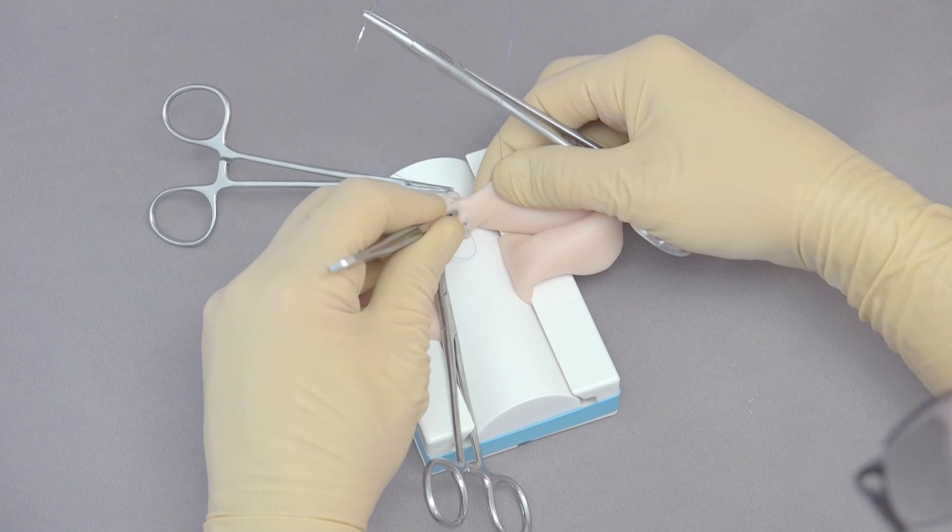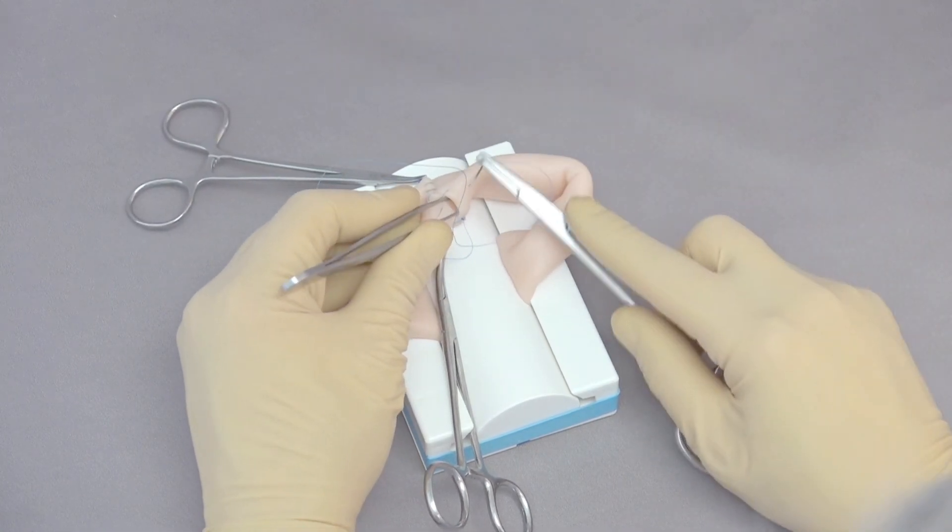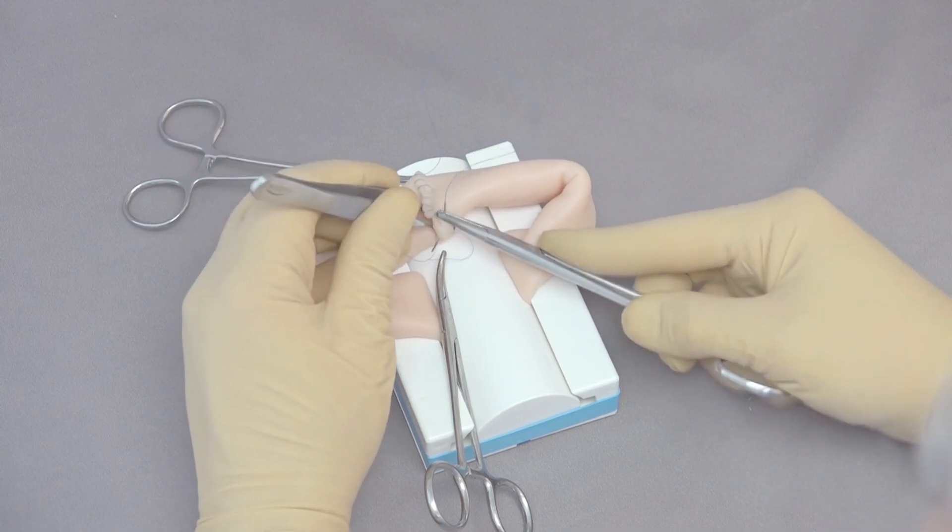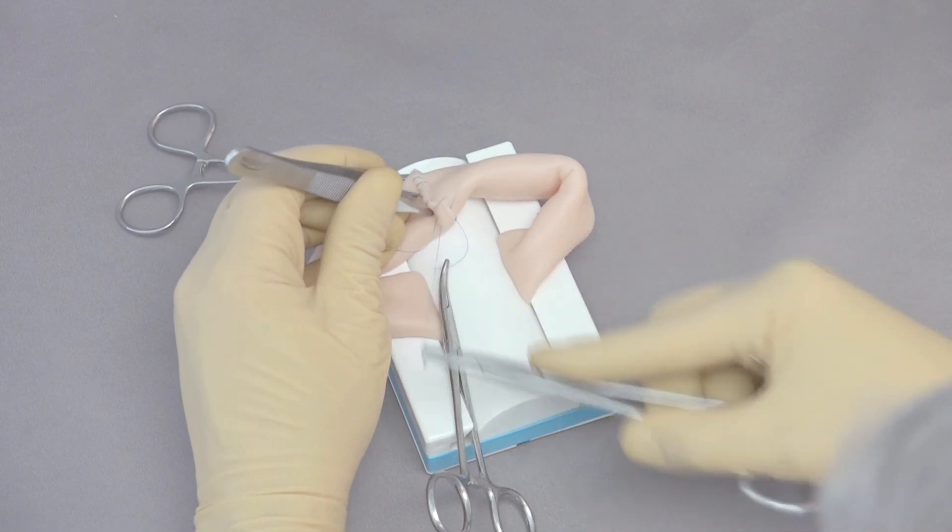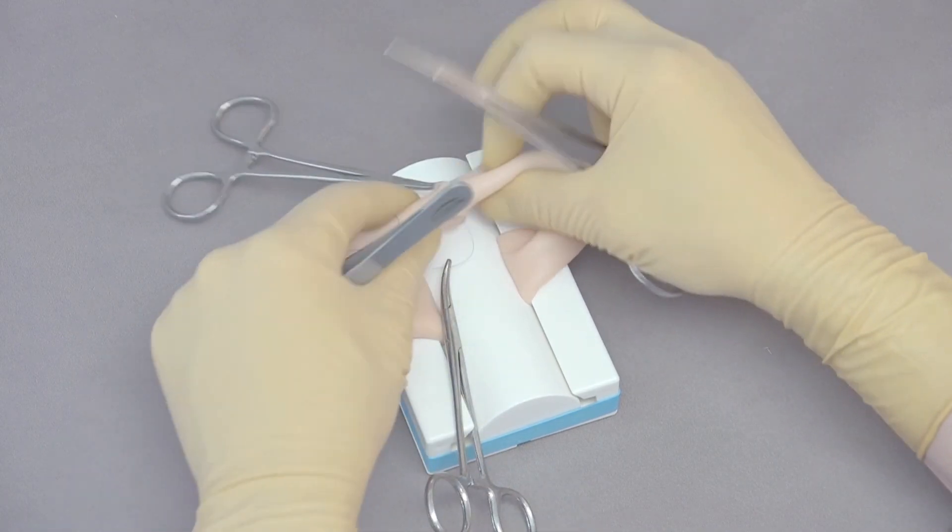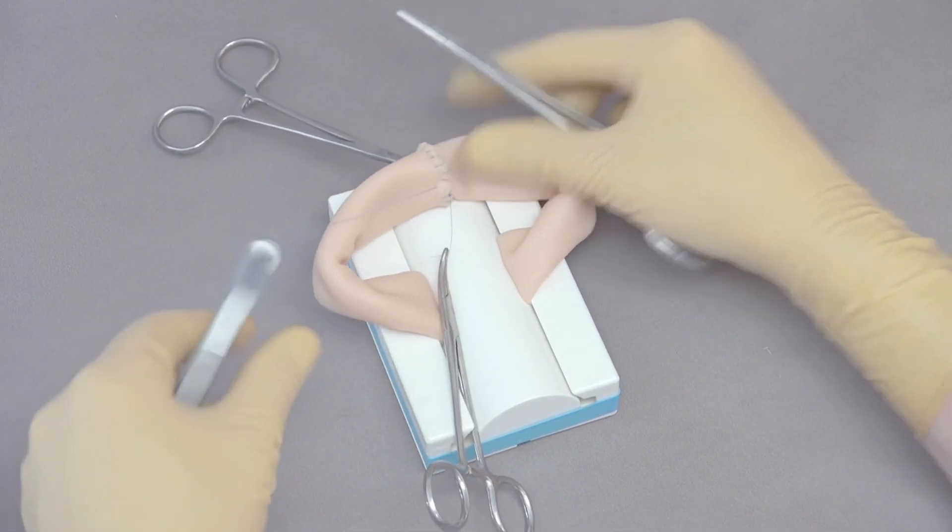And again we've got this last one, I get the thumb forceps just in the middle, making sure that I'm not going all the way across to the opposite side of the intestine. I'm going to pull that through here and now you can see I've got my closure complete.